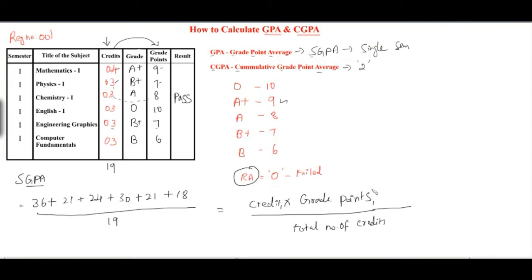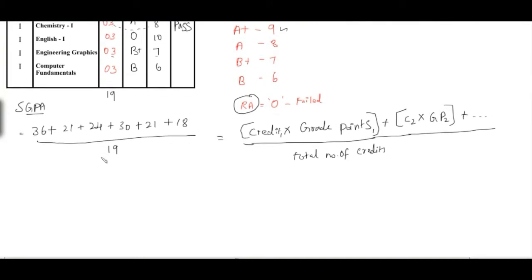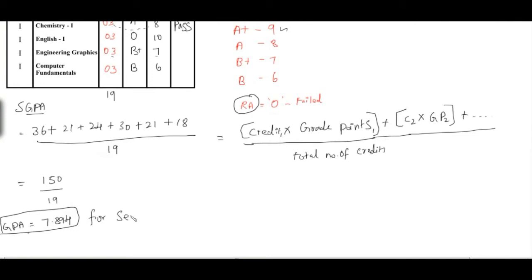The formula goes: credit for subject 1 multiplied by grade point GP1, plus credit for subject 2 multiplied by GP2, up to the 6th subject — all divided by total credits earned. The grade points differ from university to university; this is the format for Anna University. Adding all the numerators gives 150; dividing 150 by 19 gives approximately 7.894. This is the semester GPA for semester 1, for register number 001.